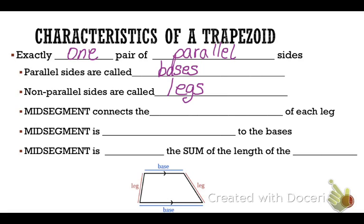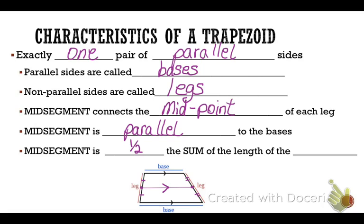You can also draw a mid-segment of a trapezoid, which connects the midpoint of each leg. The mid-segment of any trapezoid is always parallel to the bases, as marked in the diagram. And the mid-segment of a trapezoid is always one-half the sum of the length of the bases — so if you add the bases together and divide by two, you can find the length of the mid-segment.